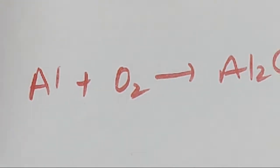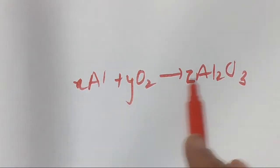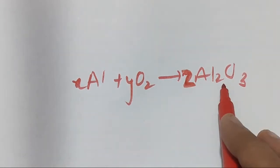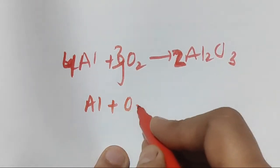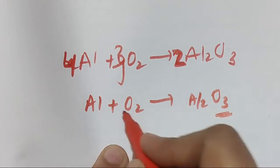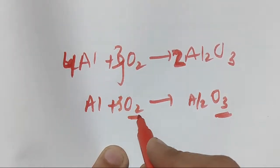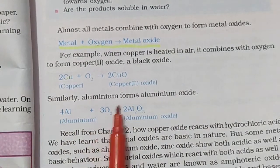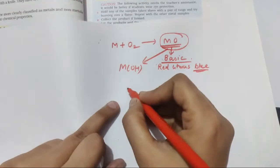In the exam the equation is given with unknowns x, y, z and you have to identify each value. To balance Al + O₂ → Al₂O₃, place 4 for Al and 3 for O₂, giving 4Al + 3O₂ → 2Al₂O₃. Since there are 3 oxygens on one side and 2 on the other, we multiply appropriately to balance at 6 oxygens.